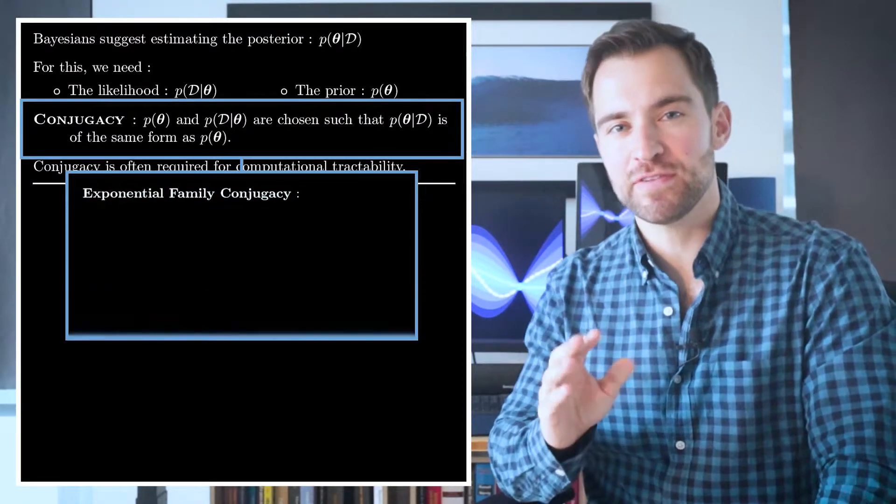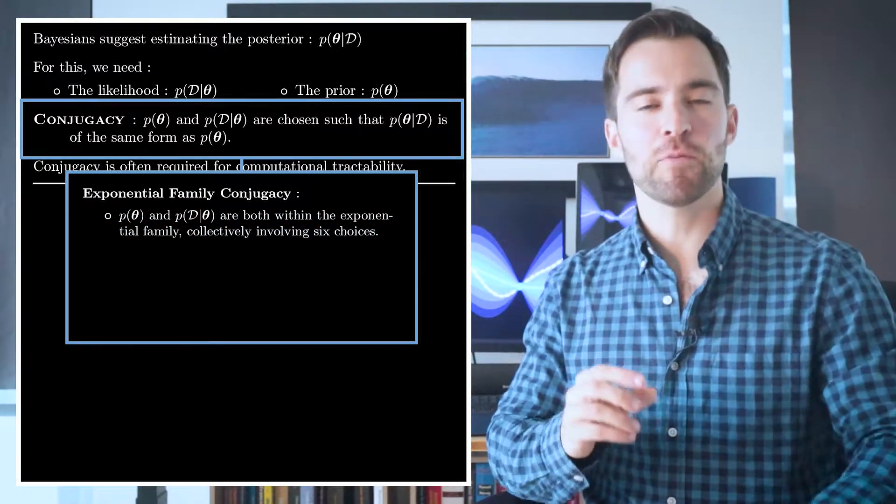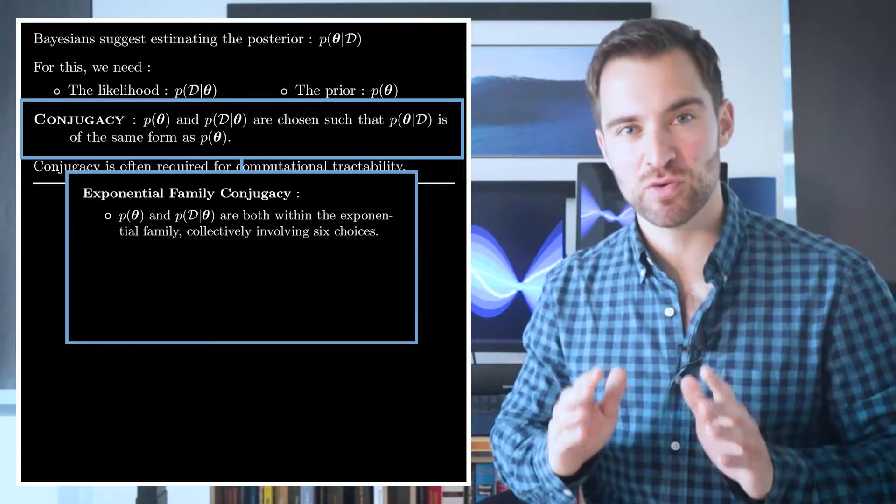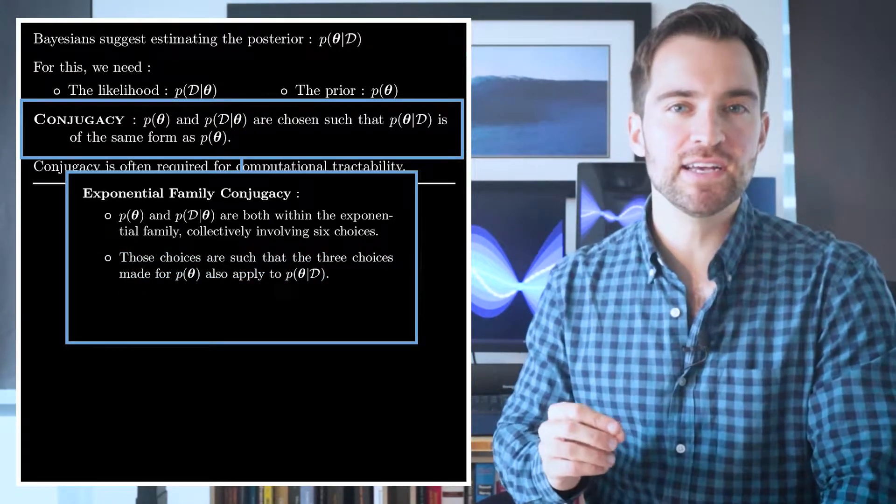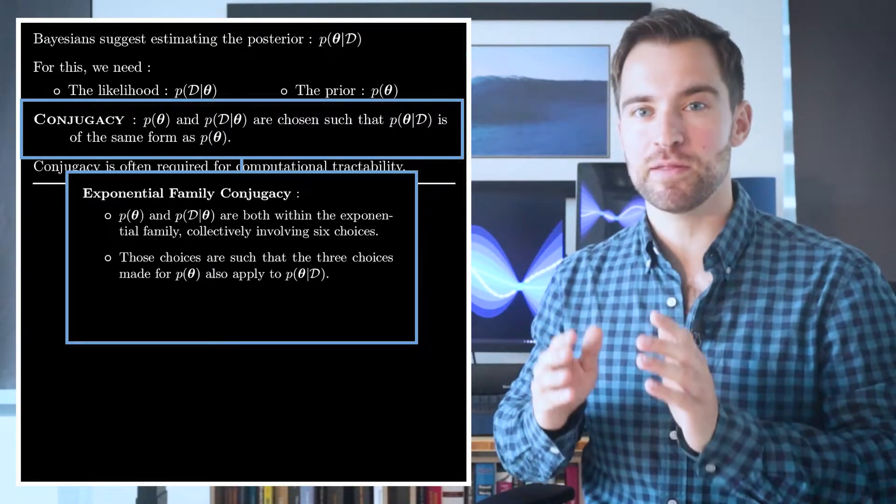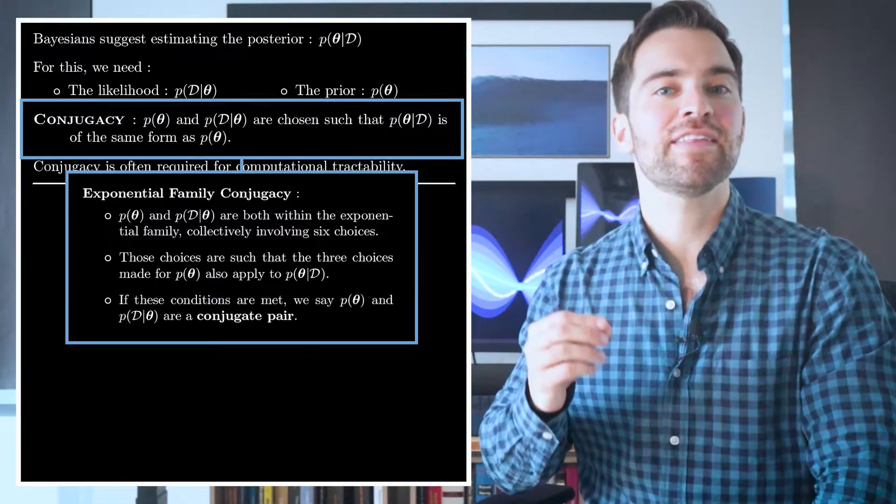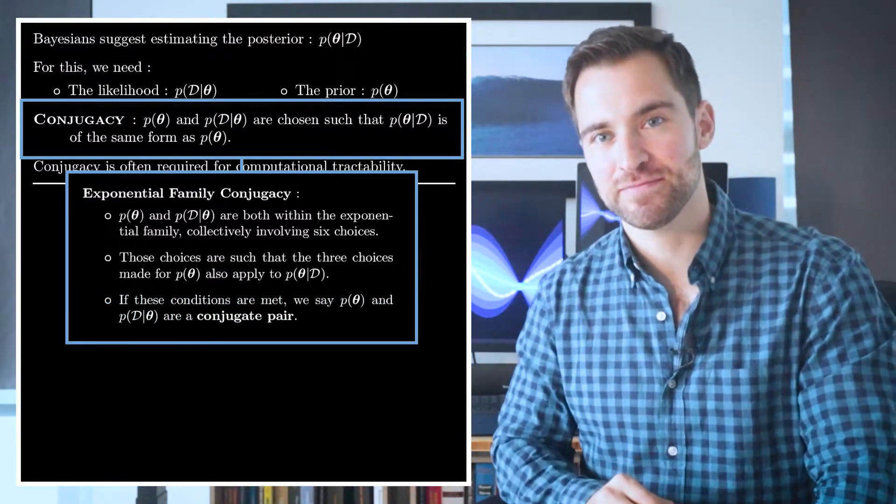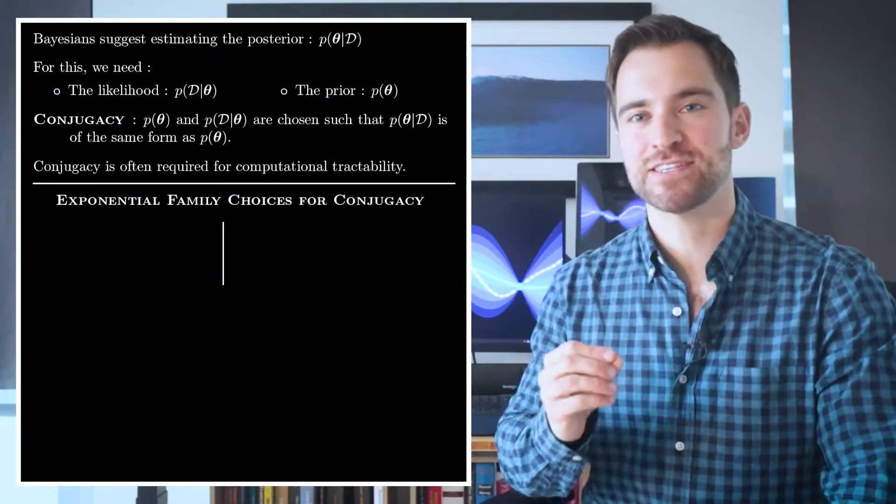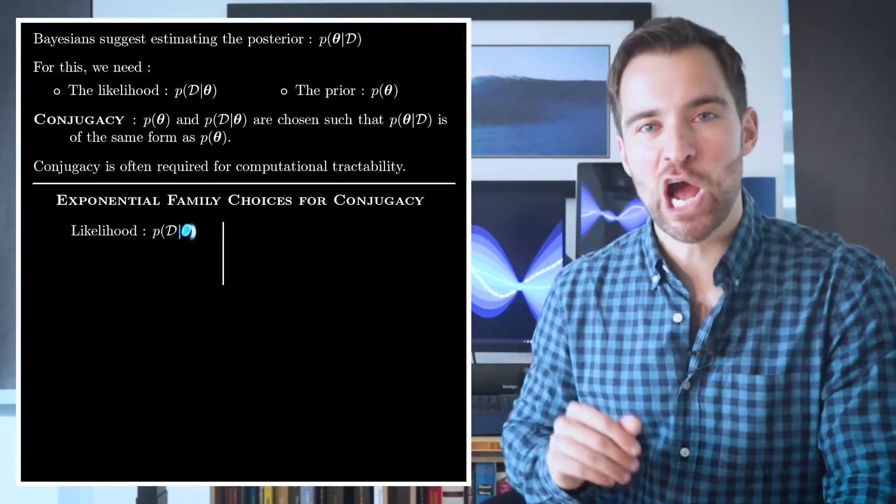Now, let's describe conjugacy more narrowly for the exponential family. Here, the prior and the likelihood are both within the exponential family, and therefore involve a total of six choices. Conjugacy means that those six are chosen such that the three that apply to the prior will also apply to the posterior. If these conditions are met, we say that the prior and the likelihood are a conjugate pair. To paint this picture more completely, I'll show how your six choices need to coordinate to yield the conjugate pair.